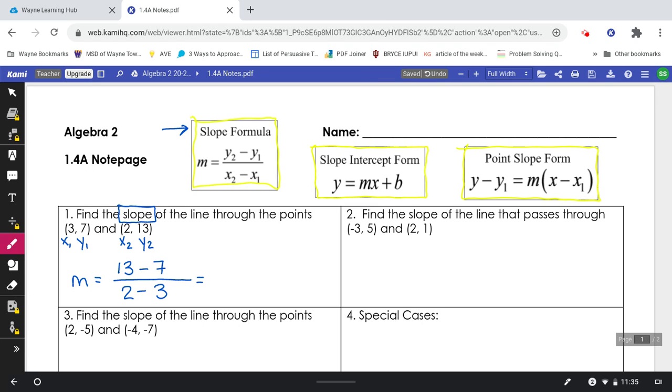Once you have those in the correct place, then you're just going to subtract. 13 minus 7 is 6. 2 minus 3 is negative 1. And I divide that out to make an answer of negative 6.